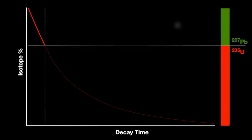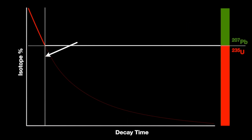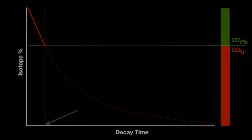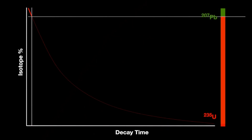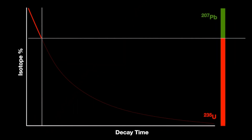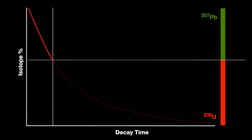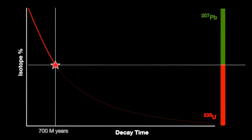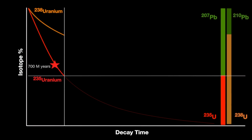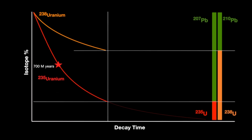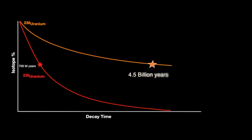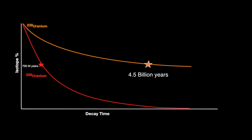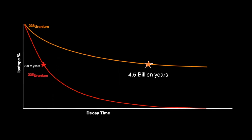Once we've measured our uranium and lead ratio we can work out basically where we fit on this curve and how old our rock sample is. For uranium we've got two isotopes: uranium-235, which has a half-life of 700 million years, and uranium-238, which has a half-life of 4.5 billion years. Because uranium-238 has such a long half-life, we can date really really old rocks using the uranium-lead method.